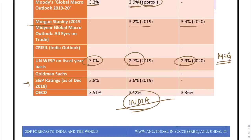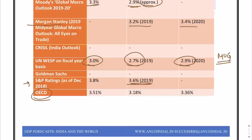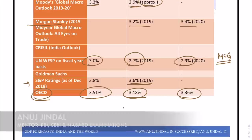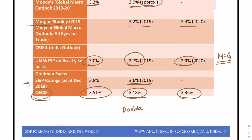S&P says 3.8% for 2018-19 and 3.6% for 2019-20. OECD — Organization for Economic Cooperation and Development — says 3.51% for 2018-19, 3.18%, and 3.36%. OECD is the only organization giving its forecast in double digits beyond the decimal point.